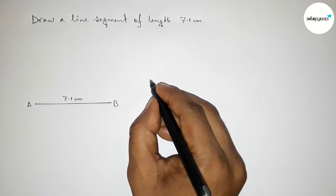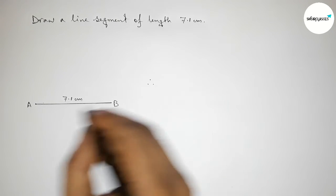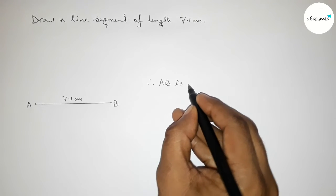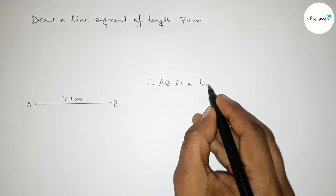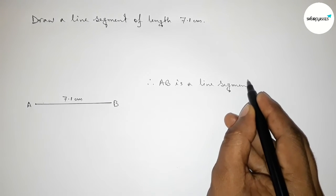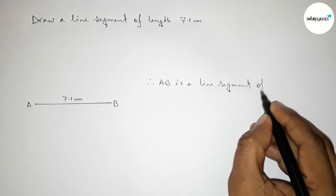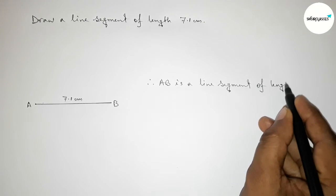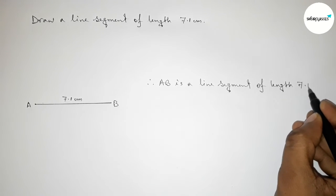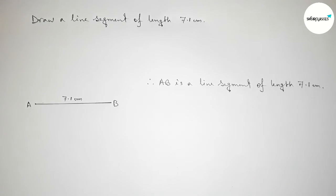Therefore, we can say that AB is a line segment of length 7.1 centimeters. With the help of a scale, you can draw this line by this way. Okay, so that's all, thanks for watching.